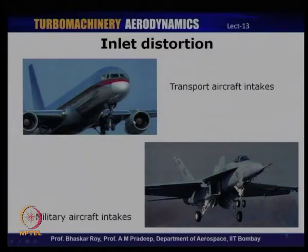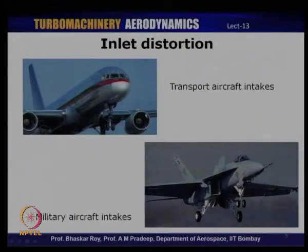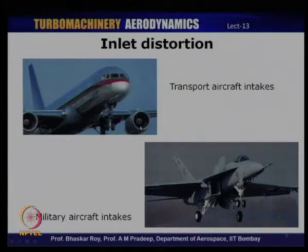Let us take a look at two different types of aircraft with different types of intake. One is a normal transport aircraft with wing-mounted engines, where you can directly see the fan of the engine. The intake here is very short for a typical subsonic aircraft, and the problem with distortion is not as severe — though it is definitely present.